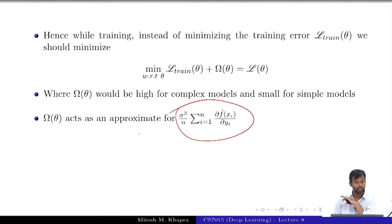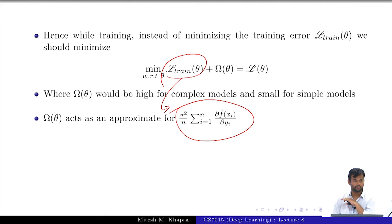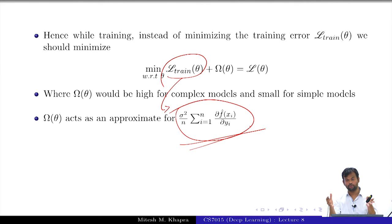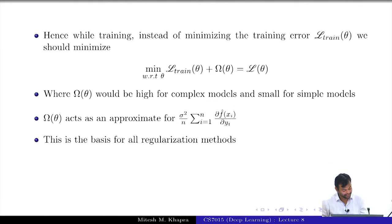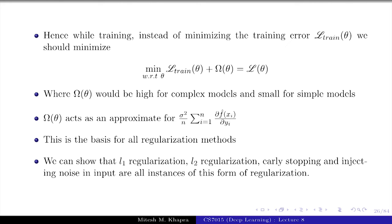What I should actually try to minimize is not just L_train(theta), but L_train(theta) plus that other complexity term from the equation, which we approximated using Stein's Lemma. Since I do not know how to directly compute that quantity, I substitute it with omega theta, ensuring omega theta is high for complex models and low for simple models. We can show that L1 regularization, L2 regularization, and early stopping are all special cases of this particular formulation.